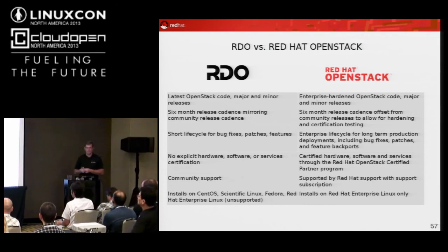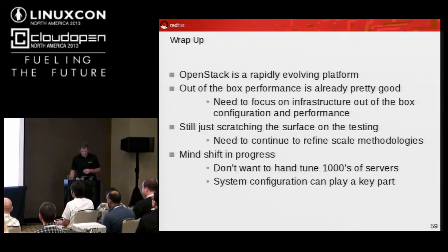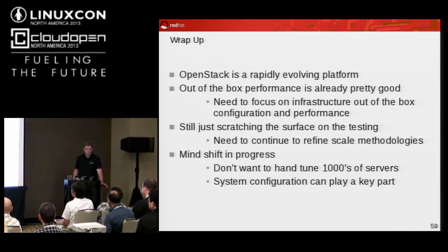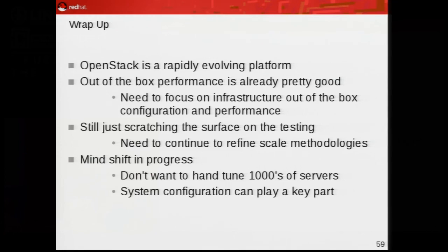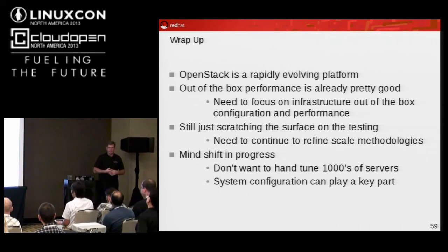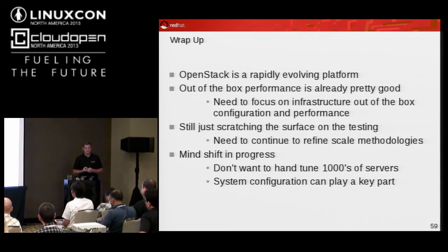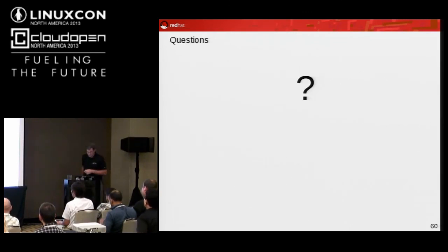For a wrap-up: as most of you know, it's what I like to call the 'bleeping edge' instead of the bleeding edge when you're on it. Out-of-box performance is pretty good. We need to focus on the infrastructure for out-of-the-box things like MySQL. We haven't even touched on Memcache yet — when it should or shouldn't get used. We're still scratching the surface. We need to refine the scale methodologies, and there's a mind shift — especially on my team — where we're talking about tens of thousands of nodes, not one. Guest performance is important but it's not the end-all. We're not spending four people trying to get another half a percent out of KVM performance — it's not going to matter at this scale. You just spin up more.